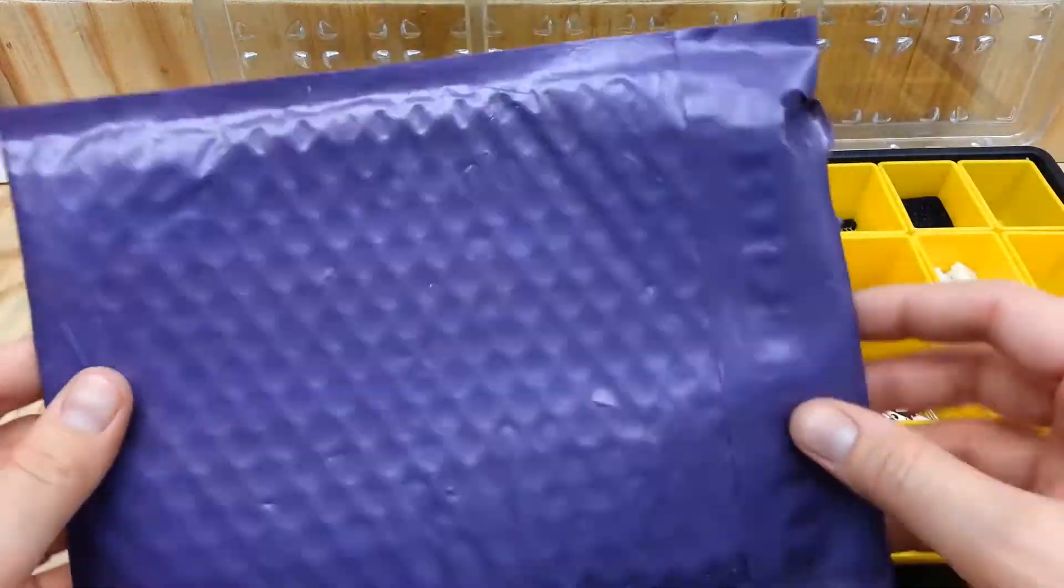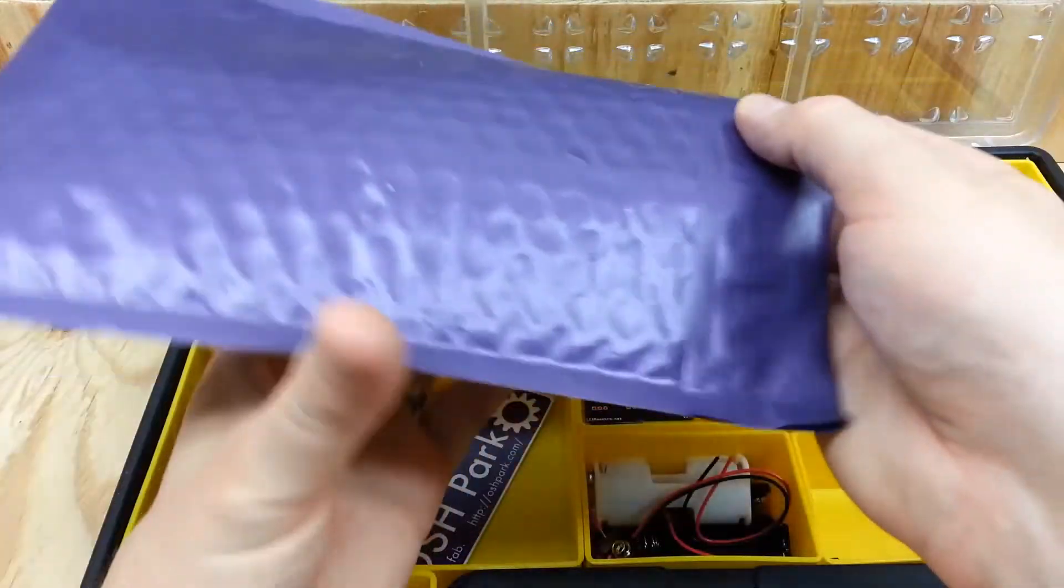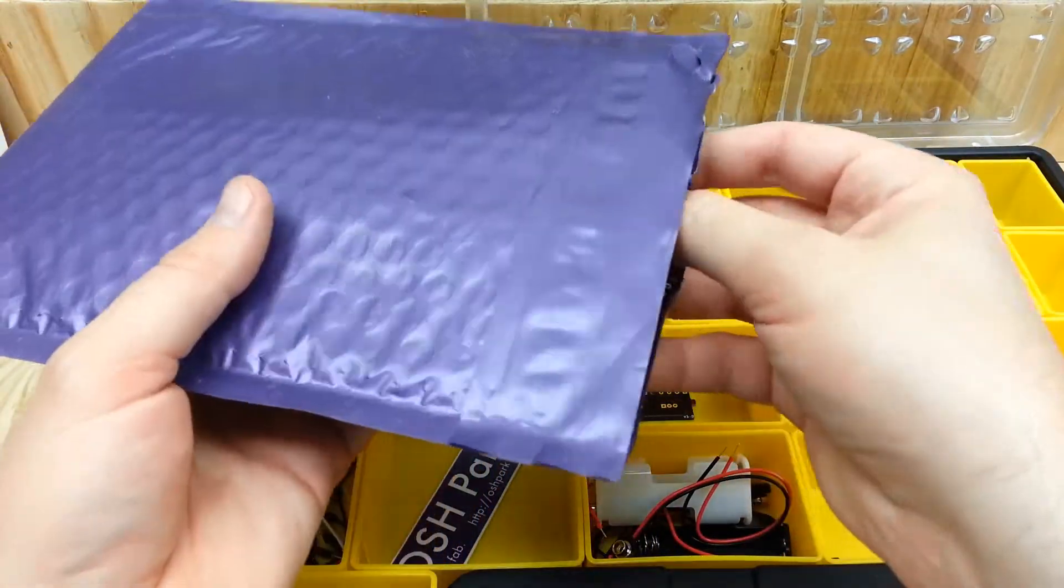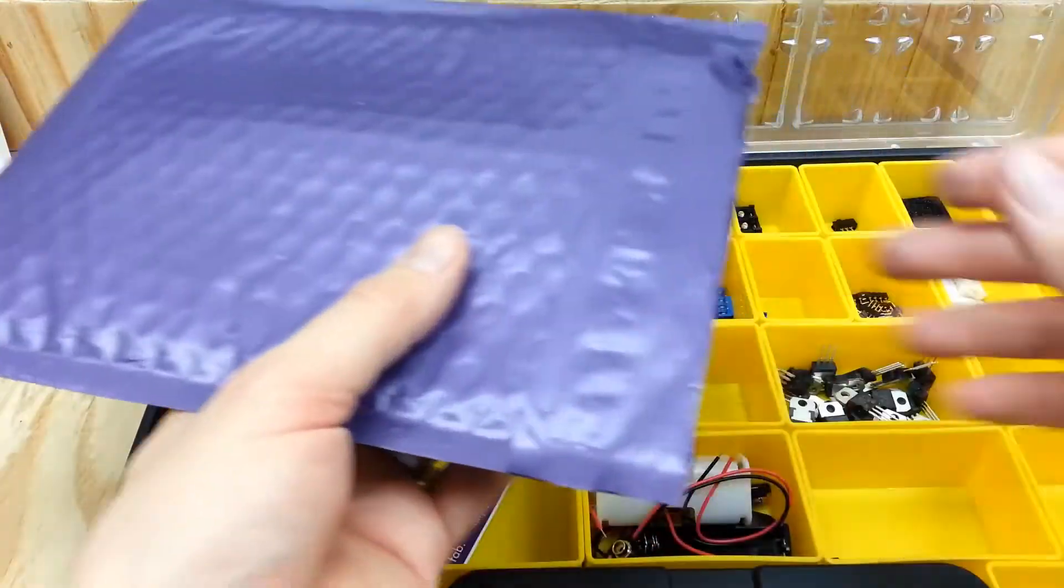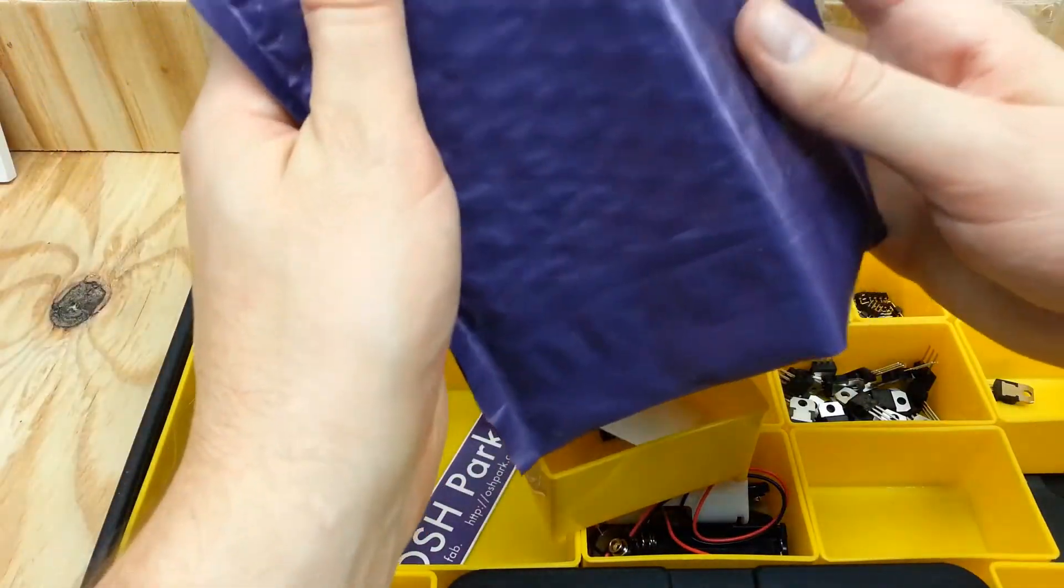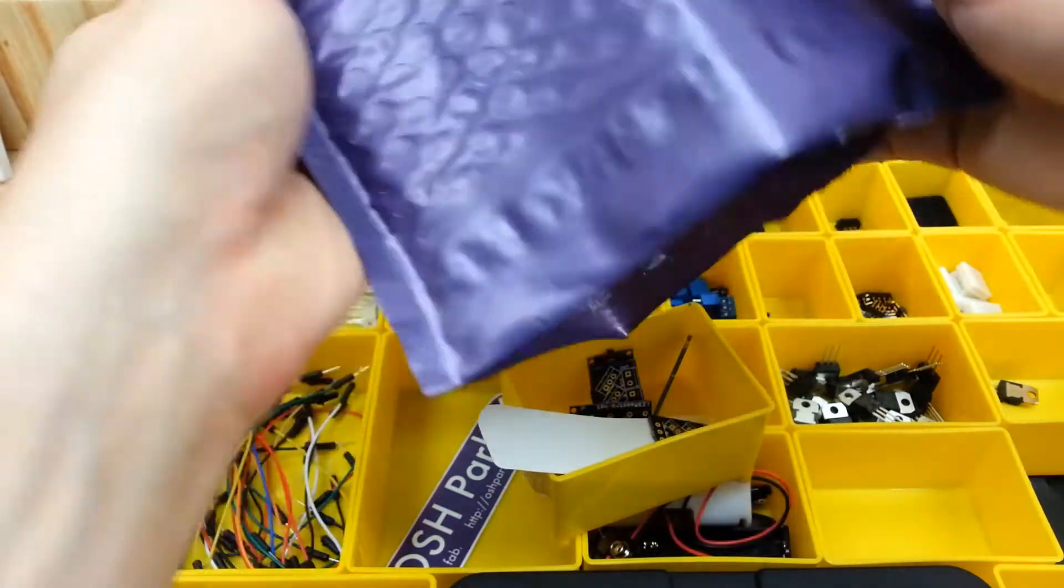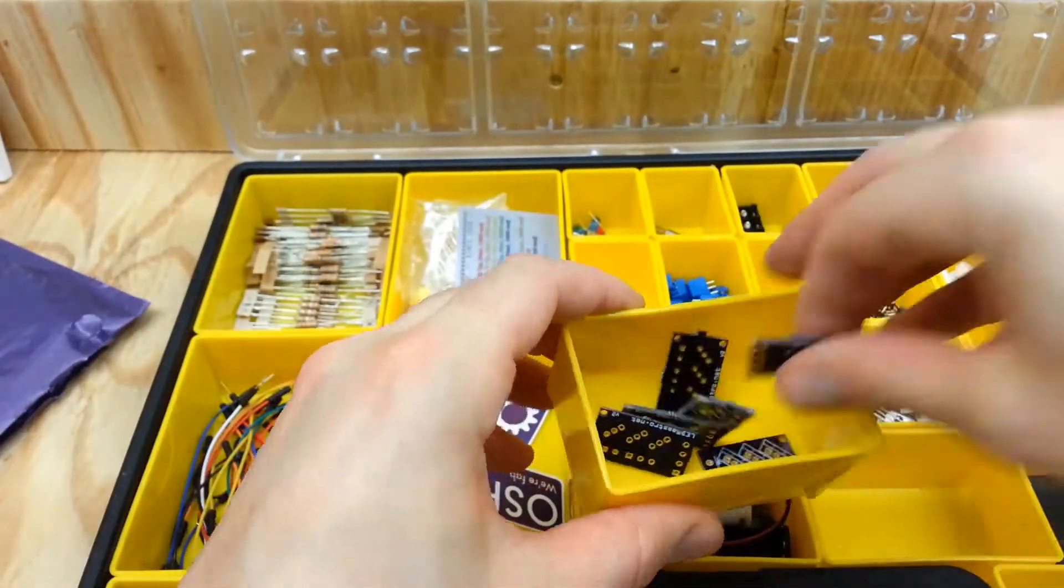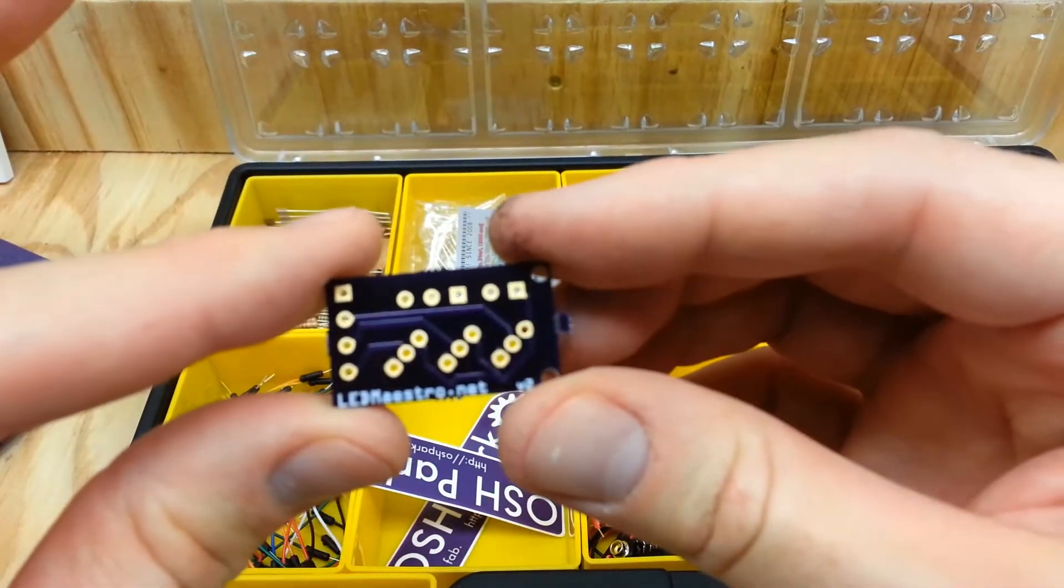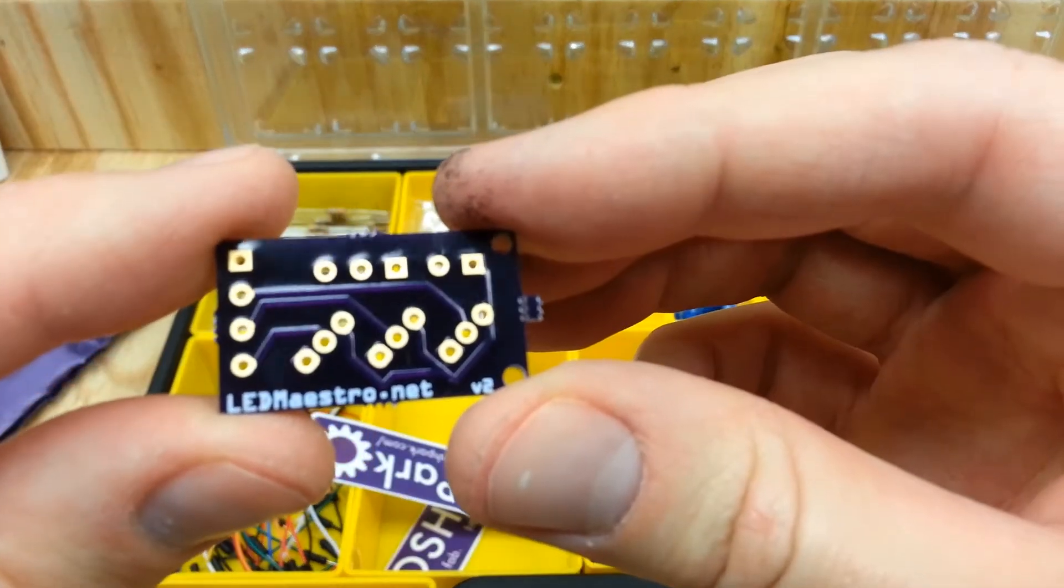Today I got a nice purple envelope again from OSH Park. I'm not really sure how to pronounce that. This time we have more circuit boards. This is version 2 of LED Maestro.